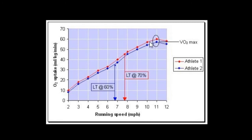For this individual, training at 10 miles per hour will achieve a similar oxygen uptake to training at 12 miles per hour. Yet at 10 miles per hour they'll be able to spend significantly more time training at their ceiling than they would at 12 miles per hour.